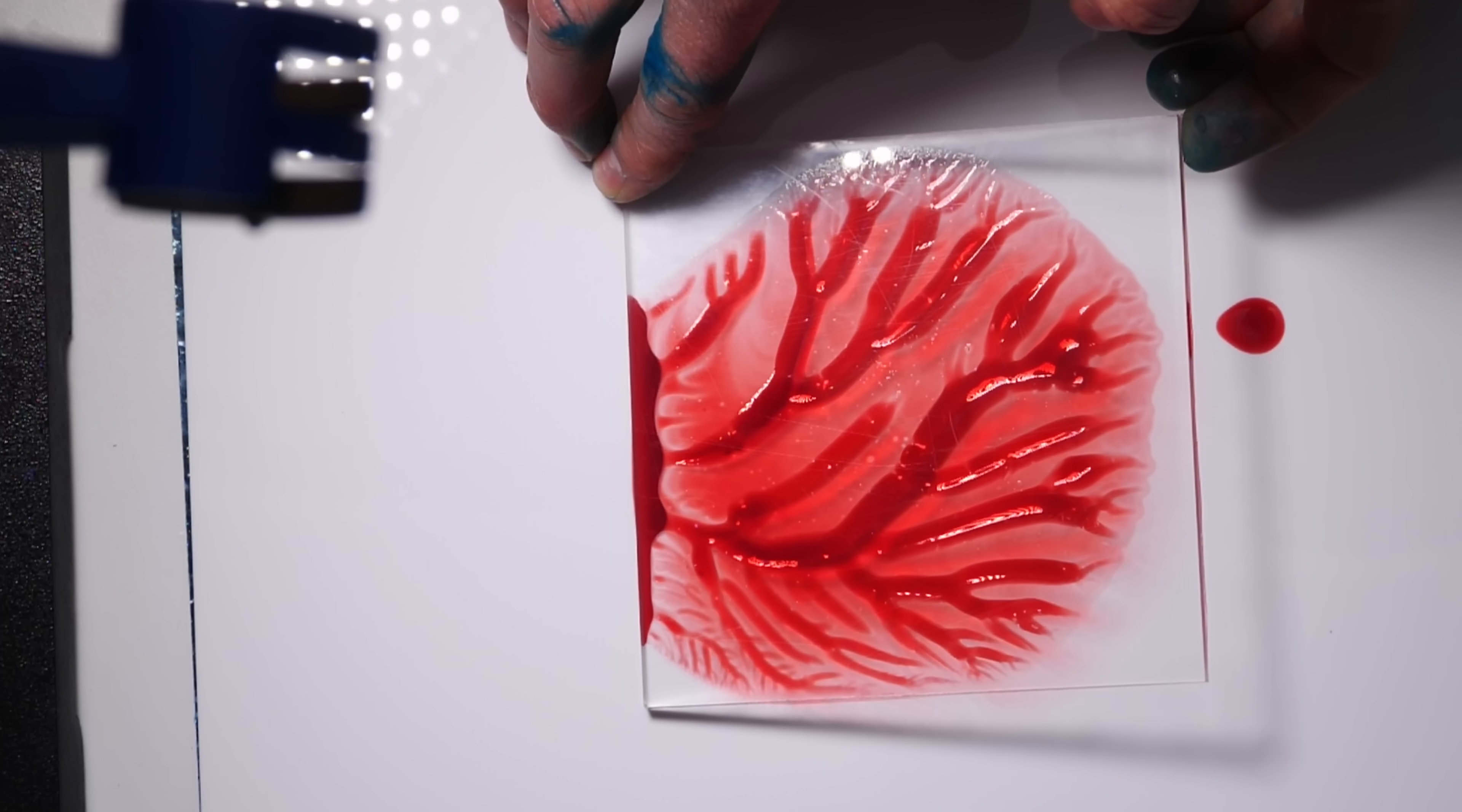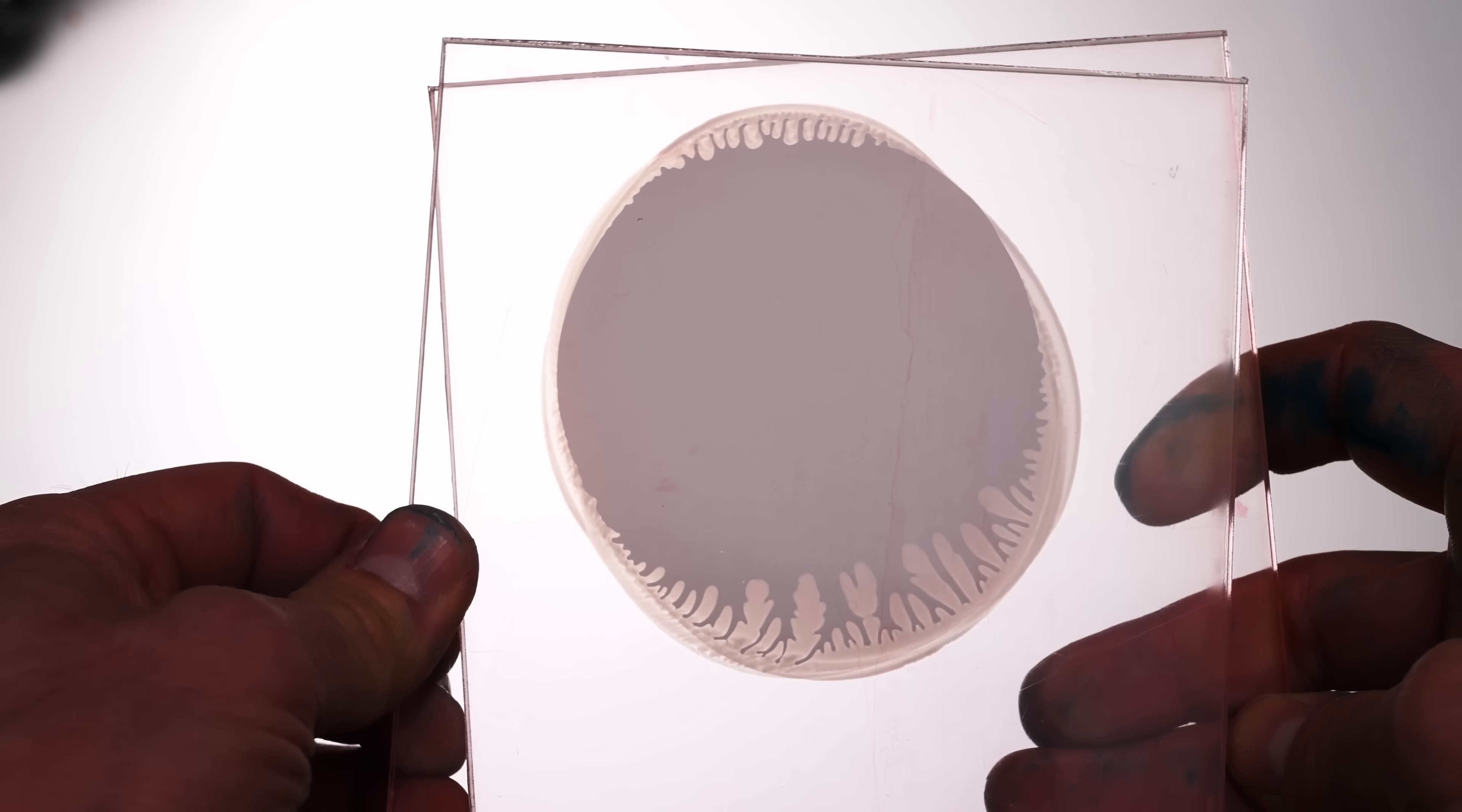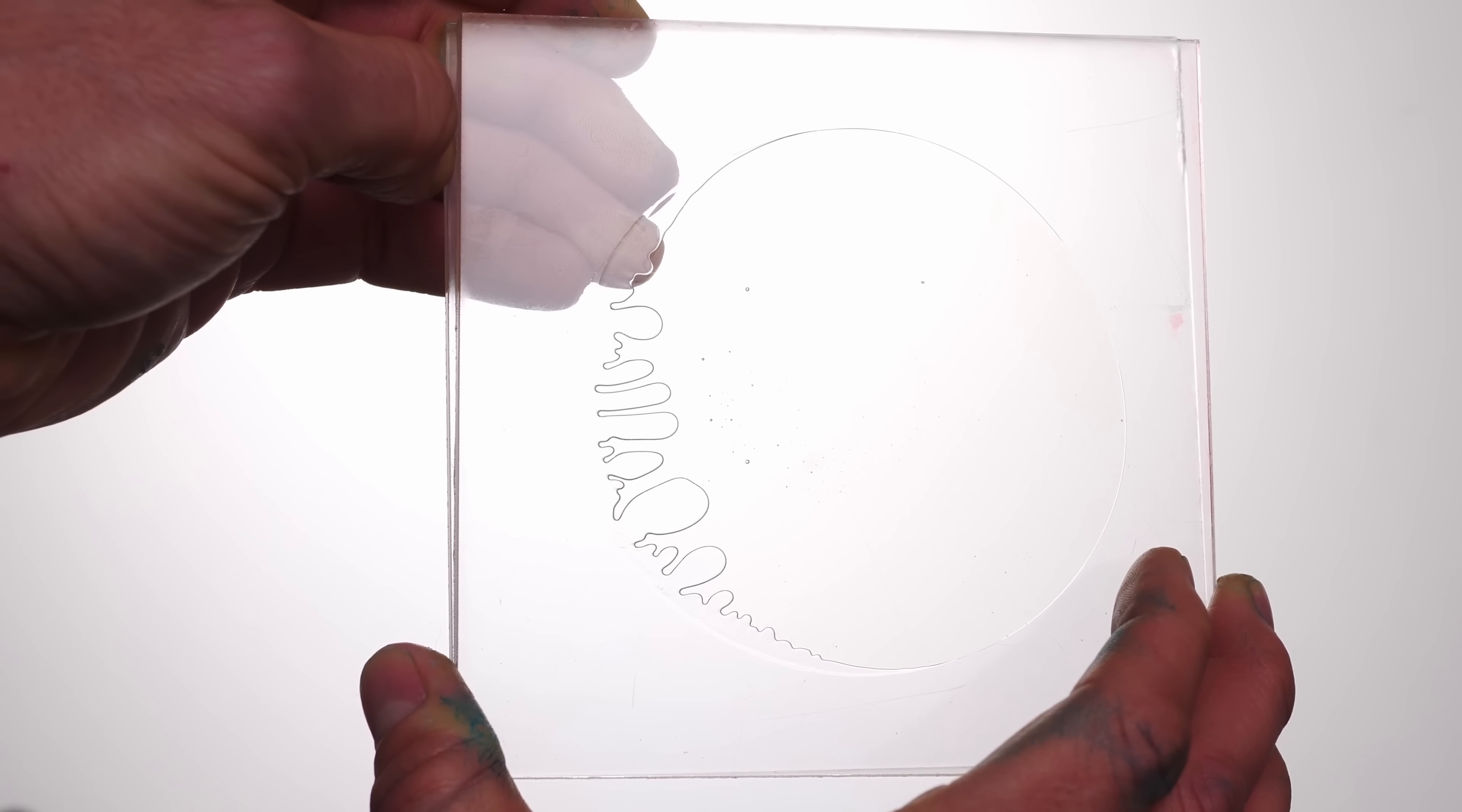But why do these fingers form and why do these fingers have fingers of their own and why do those fingers have fingers? It's fingers all the way down. In this episode of Steve puts two pieces of clear acrylic together with liquid in between. Also, viscous fingering is weirdly important. Preventing viscous fingering might help us reduce the amount of carbon dioxide in the atmosphere, but it might also help us add more carbon dioxide to the atmosphere, so it's kind of a mixed bag.